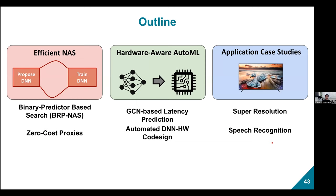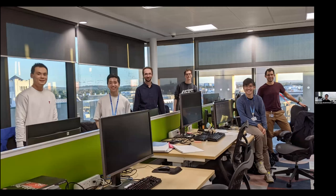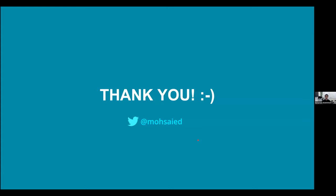In summary, I covered efficient neural architecture search with binary relation prediction and zero-cost proxies; hardware-aware AutoML with GNN-based latency prediction and co-design of hardware and neural networks; and two application case studies — super resolution for Samsung TVs and speech recognition compression for Samsung phones achieving 5x compression. This work was done with an amazing team at Samsung, including Honkai, Royce, Javier, Lucas, and Thomas, who did most of the actual work.